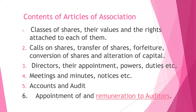Let's now understand the contents of Articles of Association. It gives complete details about the various types or classes of shares, values of their shares, and the voting rights attached to each — that is, equity shares and preference shares are clearly mentioned. It also covers calls on shares, procedure for transfer of shares, forfeiture or conversion of shares, and alteration of capital.